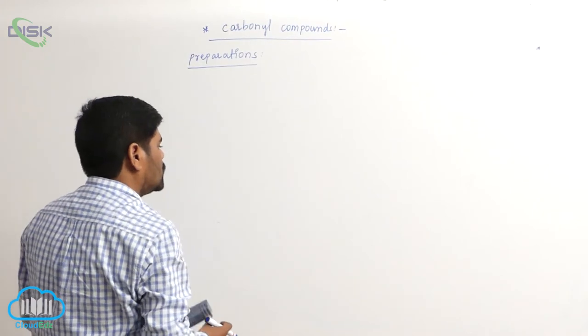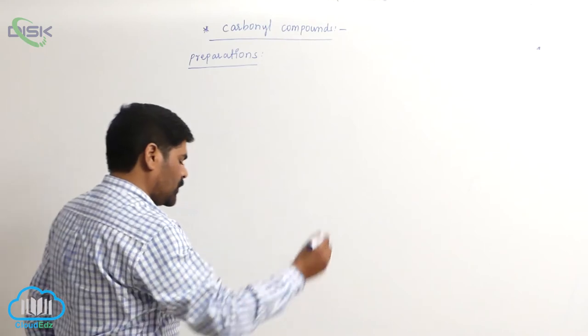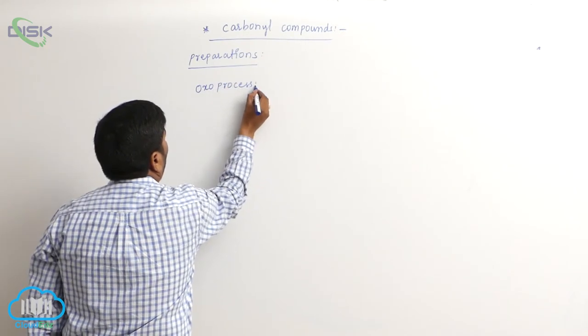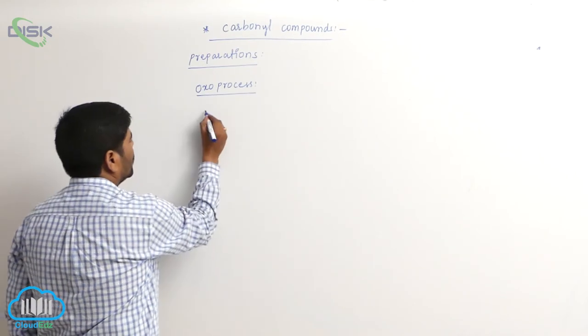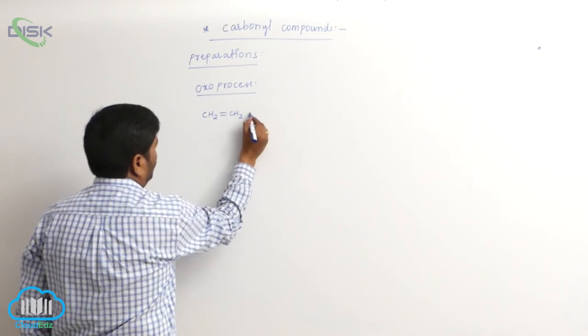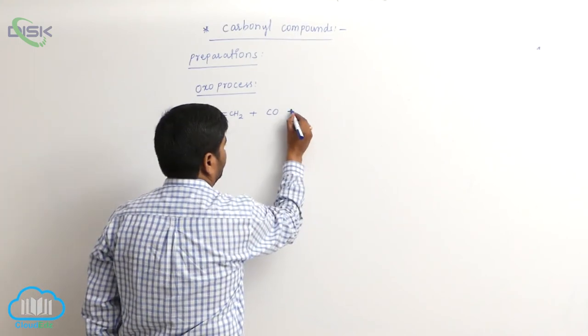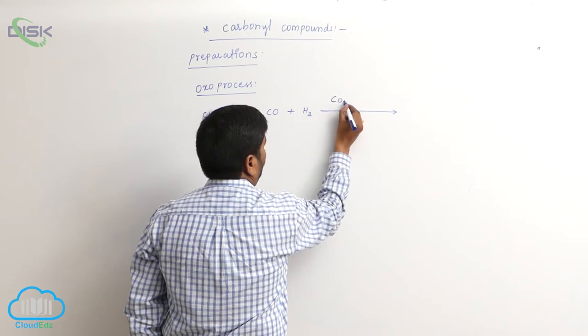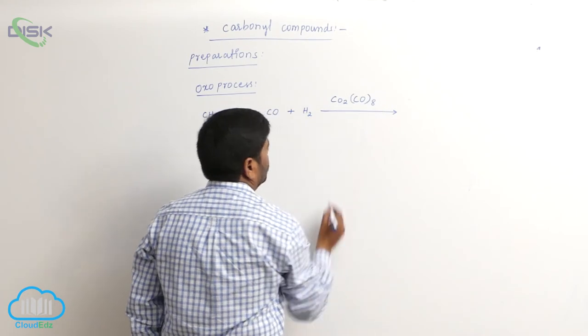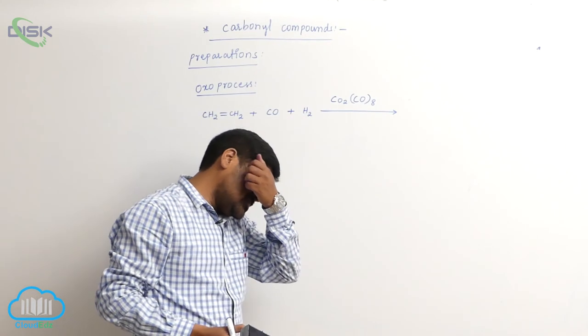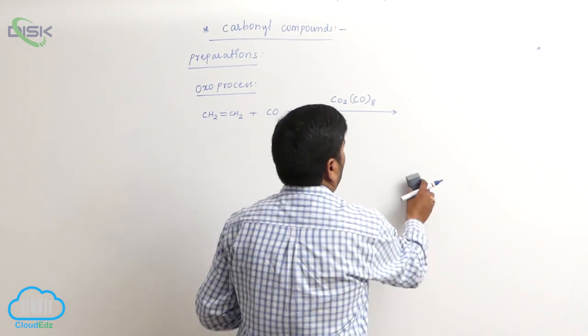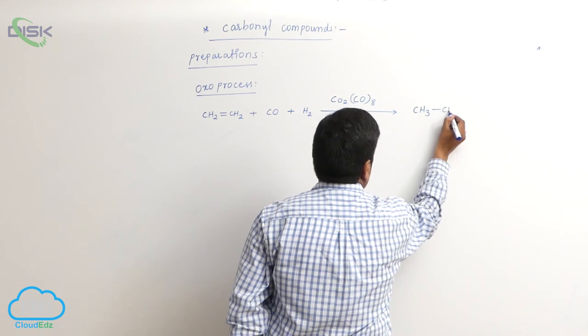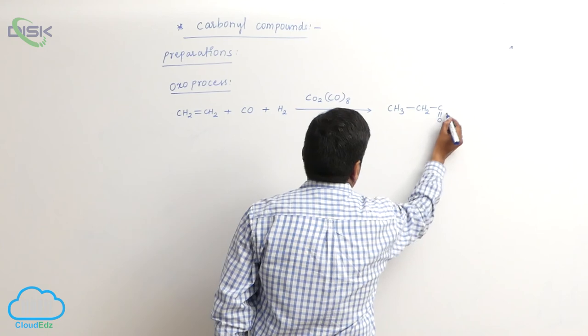Next: the oxo process. When ethylene reacts with carbon monoxide in the presence of hydrogen gas, with the catalyst Co2(CO)8 - octacarbonyl dicobalt - which is a metal carbonyl complex, it forms propionaldehyde when carbon is increased.